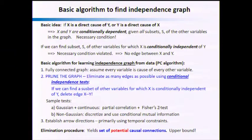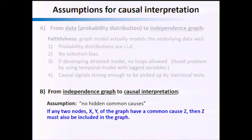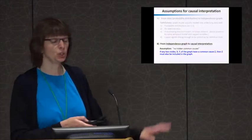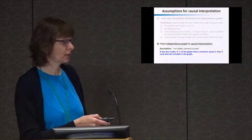Keep in mind this is an elimination procedure — what you get at the end are only potential cause-effect relationships. They're not proven, just potential ones. But anything outside of that set is not a causal relationship. There are some conditions to make sure we do the math properly. Going from the data probability distribution to the independence graph, there are some conditions — mostly satisfied even if technically violated. The big one is going from the independence graph to an actual causal interpretation.